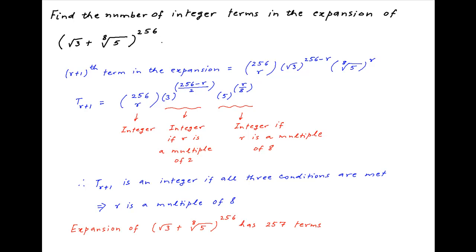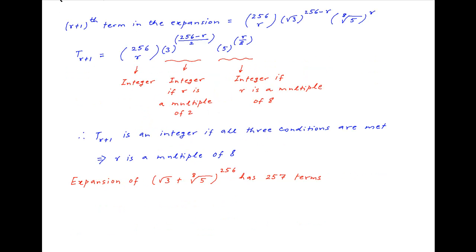The expansion of (√3 + ⁸√5)^256 has 257 terms. For any term t_{r+1} to be an integer, r can take values 0, 8, 16, 24, and so on up to 256, which is the greatest multiple of 8 less than 257.